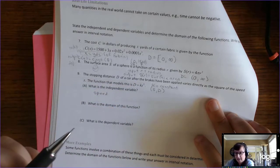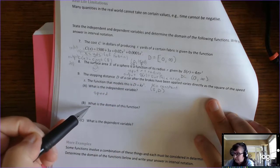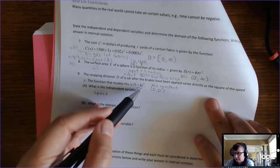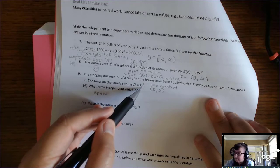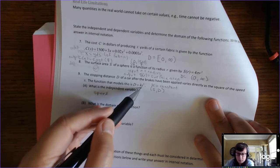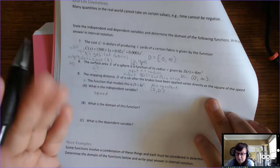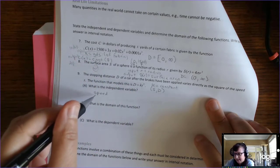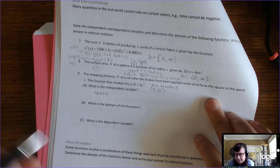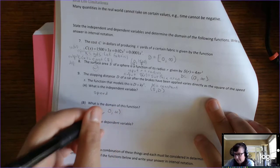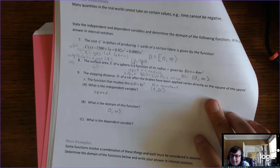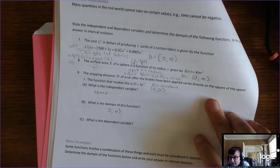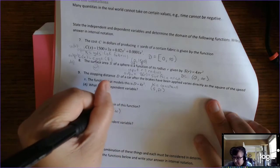All right. So, the domain of this function, well, number one, is there a variable s in the denominator? Nope. Is there a variable s in a radical? Nope. So, normally, this s would have a domain of all real numbers, but it's a word problem. So, can speed be negative? No. Okay. So, the domain is going to be zero to infinity. Now, can you have zero speed? Can you be traveling zero miles per hour? Well, then your stopping distance would be zero. Okay. And that's valid. So, I'm going to put a bracket there.